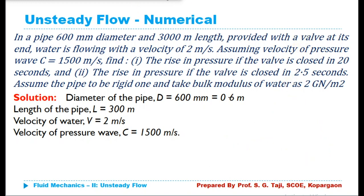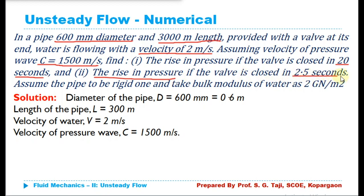Now we will solve some numericals. In a pipe of 600 mm diameter and 300 meter length, provided with a valve at its end, water is flowing with a velocity of 2 meter per second. Assuming the velocity of the pressure wave is 1500 meter per second, find the rise in pressure if the valve is closed in 20 seconds and also when closed in 2.5 seconds. Assume the pipe is rigid, so no need to consider the elasticity of the pipe.